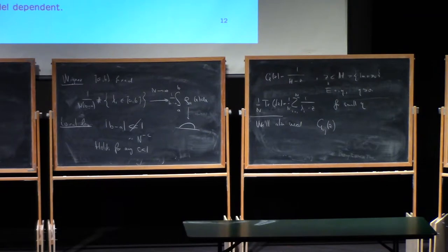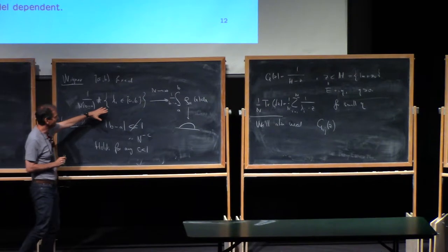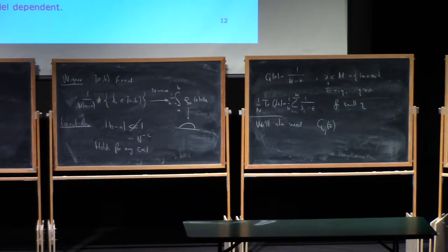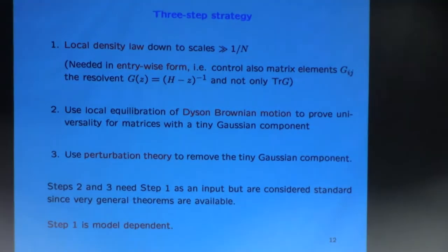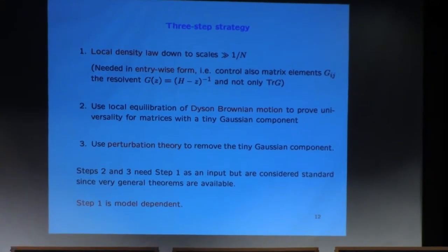The local density is still on a scale above 1/n and is a law of large numbers type result, so it doesn't tell you anything about local fluctuations. To understand the sine kernel you have to go to exactly the scale of 1/n. Nevertheless, within the three-step strategy, we found that even though the local density doesn't answer the question immediately, it serves as a very useful prior input for the other two steps.